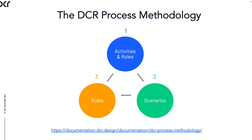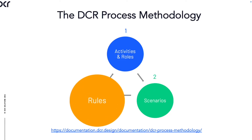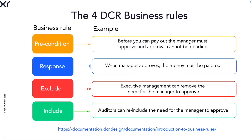Let's look at the DCR process methodology again. I have described roles, activities, and provided a few scenarios including a forbidden one. The next step is to add rules. In a DCR graph, we can express rules using four different types of relations between activities. The first is the condition/milestone relation — before you can pay out, the manager must approve and approval cannot be pending. The response relation or follow-up action — when the manager approves, the money must be paid out. The exclude relation — executive management can remove the need for the manager to approve. And the include relation — an auditor can re-include the need for the manager to approve. We believe business people can understand and use these four relations, compared to the more than 100 different symbols found in traditional BPMN diagrams.